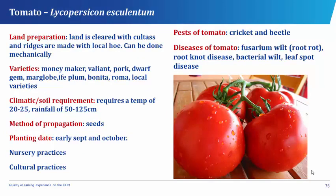Tomato is a vegetable crop commonly grown by peasant farmers in West Africa. The fruit, called berry when ripe, can be eaten raw. It can be used for soup or stew preparation or in preparing vegetable salad and other food. In planting tomato, the land is cleared with cutlass and ridges are made with local hoe, or land can be prepared by plowing, harrowing, and ridging.